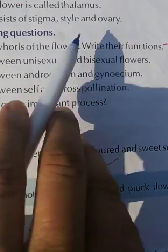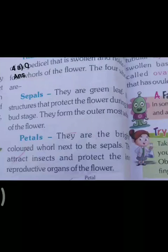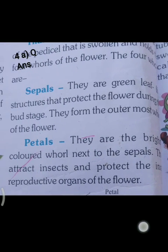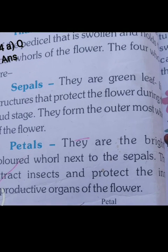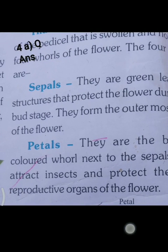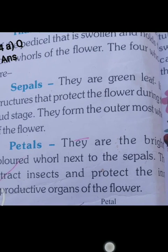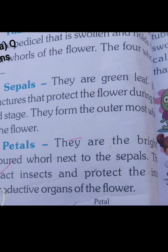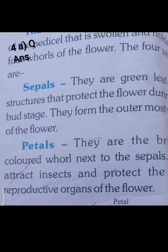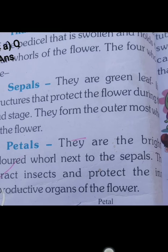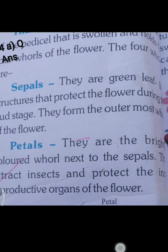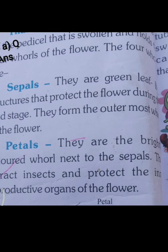Question and Answers. First: name the four whorls of the flower and write their functions. Answer: a flower has four whorls. Sepals — they are green leaf-like structures that protect the flower during the bud stage; they form the outermost whorl of the flower. Petals — they are the brightly colored whorl next to the sepals.